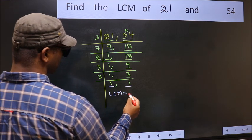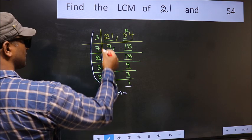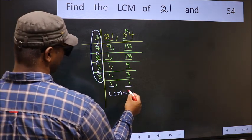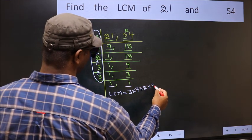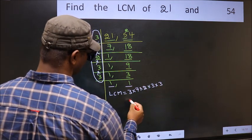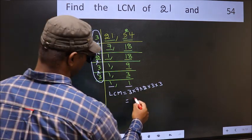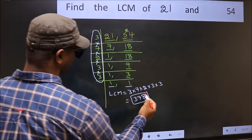So our LCM is, LCM is the product of these numbers. That is 3 into 7 into 2 into 3 into 3 into 3. When we multiply these numbers, we get 378 is our LCM.